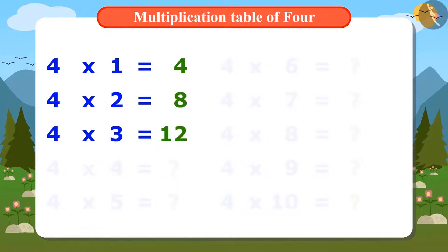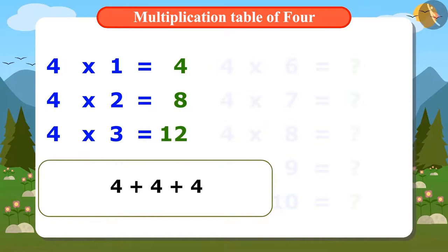Look, to find out 4 times 3, we have added 4 three times, whose answer is 12. Now by adding 4 to 12, we can find out how much do we get if we add 4 four times.